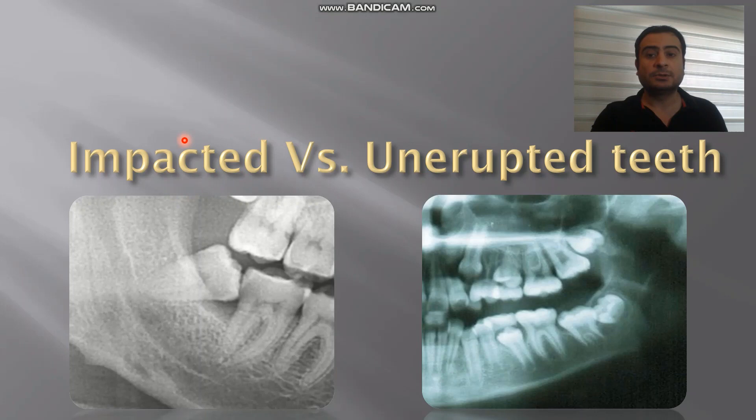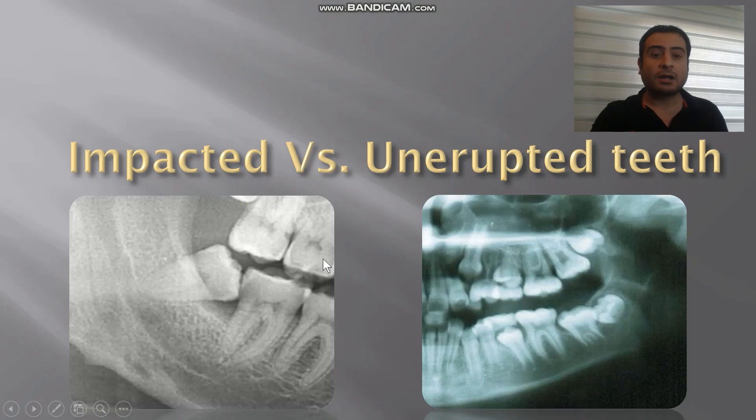What is the difference between an impacted tooth and an erupted tooth? An impacted tooth is a tooth that has failed to erupt within the specified period of time, while unerupted teeth would include teeth within the development time and teeth that are deemed to be impacted. Regarding the third molar, the time specified for its eruption is between 18 and 25 years. After 25 years, the tooth is considered to be impacted.